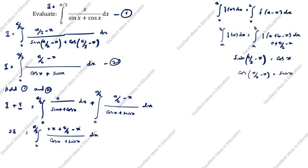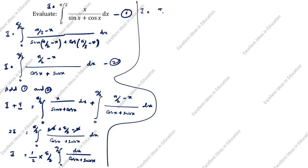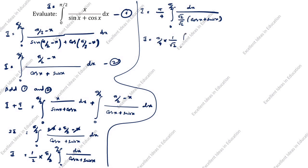Since x and minus x cancel in the numerator, we get 2I equals the integral from 0 to π/2 of π/2 divided by (cos x + sin x) dx. Bringing the 1/2 to the right side, I equals (1/2) times (π/2) times the integral from 0 to π/2 of dx divided by (cos x + sin x).